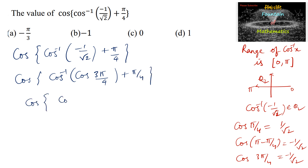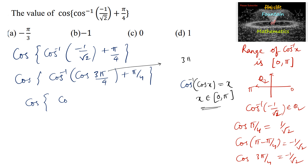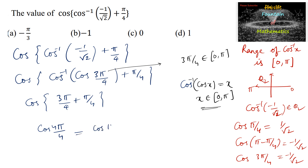Applying cos⁻¹(cos x) = x, which holds when x belongs to [0, π]: here 3π/4 is 135°, which lies in [0, π]. So cos⁻¹(cos(3π/4)) = 3π/4. Adding π/4 gives 3π/4 + π/4 = 4π/4 = π. The value of cos π is −1, so the answer is option B.